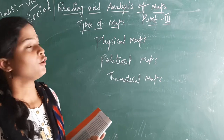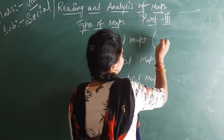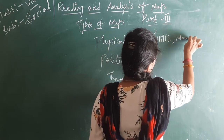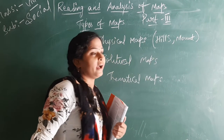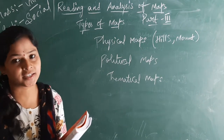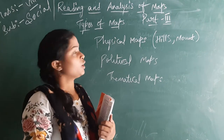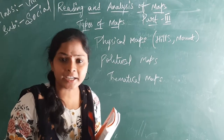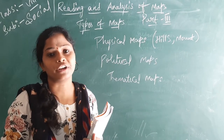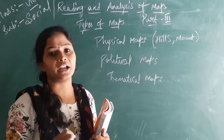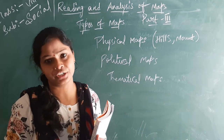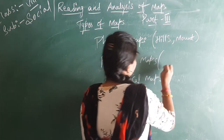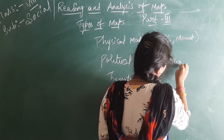So, physical maps — the use of physical maps is to know about the height of places, such as mountains. We will use physical maps. What are political maps? Political maps are used for the boundaries, for country-to-country differentiation. Okay, villages and towns, we will specify in the political maps.